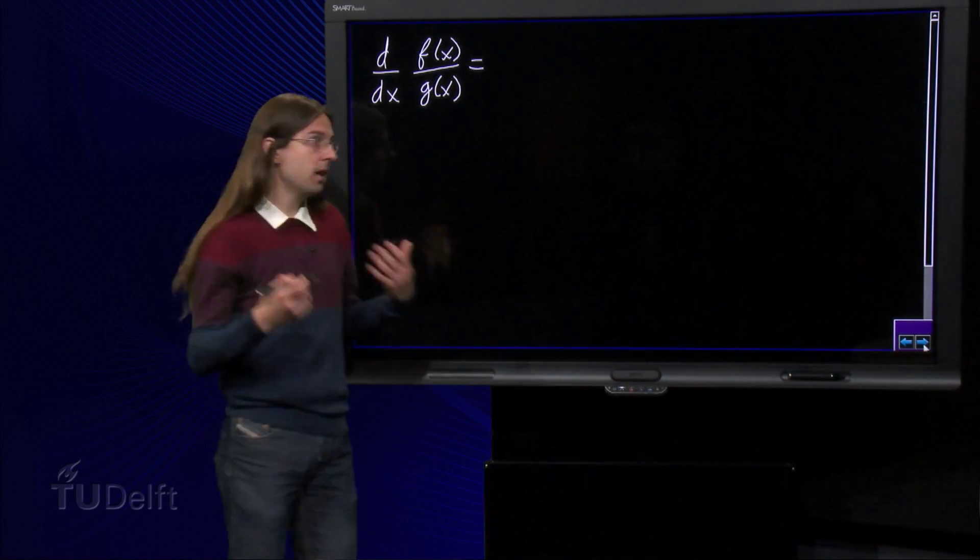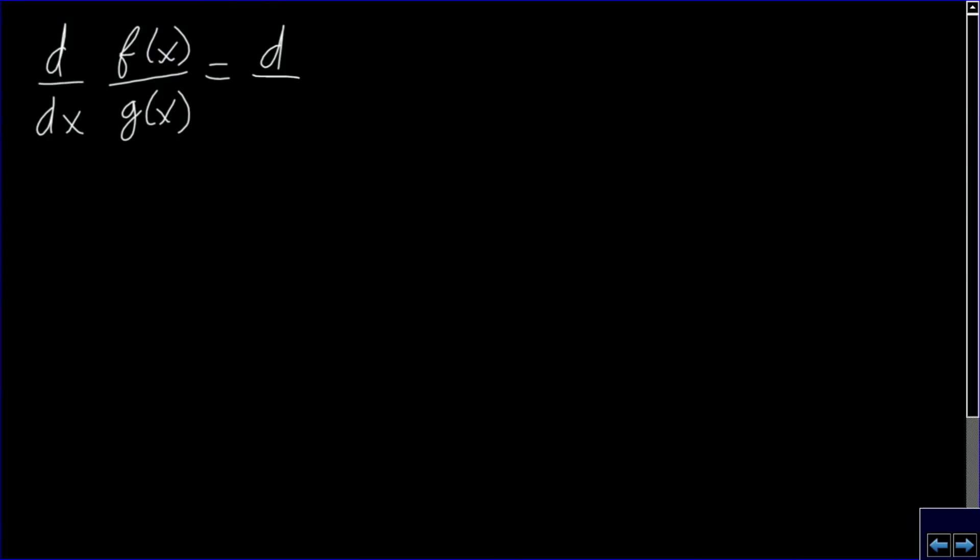Indeed, f over g equals the product of f of x and 1 over g of x, so using the product rule we obtain that this equals f prime times 1 over g of x plus f of x times the derivative of 1 over g of x.